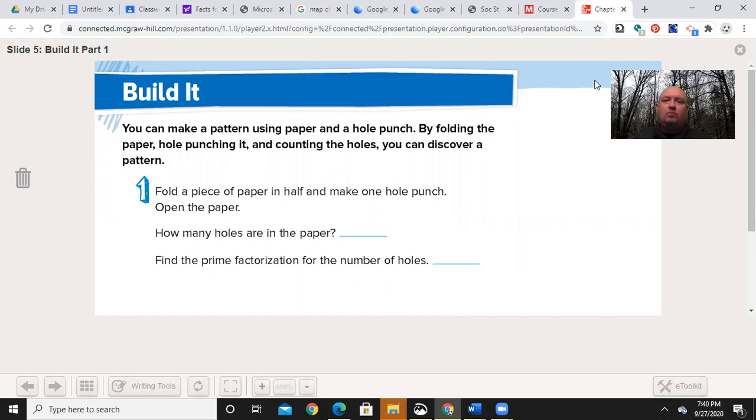Let's begin with our essential question: What strategies can be used to multiply whole numbers? We'll start at Step 1. It says fold a piece of paper in half and make one hole punch. I'm going to fold it. There's my one. I've got a pen because I do not have a hole punch handy. I open it up, and how many holes do you think there will be? If you said two, you are correct. One, two. What's the prime factorization? Well, just two.